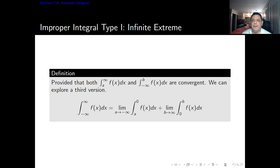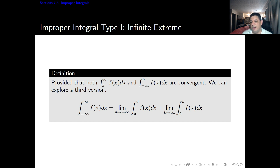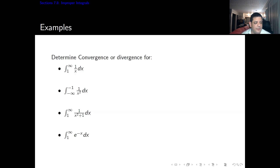If both of those integrals exist, we can talk about a third version: the integral from minus infinity to infinity of f(x) dx. We split this at zero — taking the limit when a goes to minus infinity of the integral from a to 0 of f(x) dx, plus the limit when b goes to infinity of the integral from 0 to b of f(x) dx. Because both of these integrals exist, the general integral from minus infinity to infinity exists. Now let's see some examples so we can see how to do this in practice.